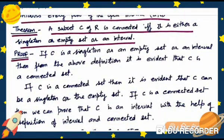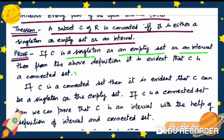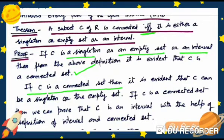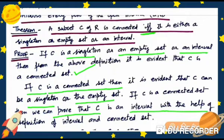Proof: If C is a singleton, empty set, or an interval, then from the above definition it is evident that C is a connected set. Conversely, if C is a connected set, then it is evident that C can be a singleton or empty set. If C is a connected set, then we can prove that C is an interval with the help of the definition of connected set.